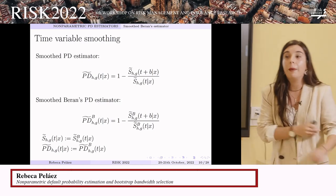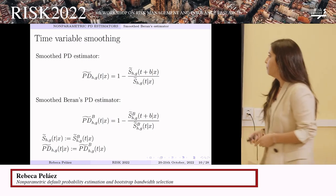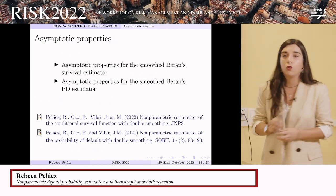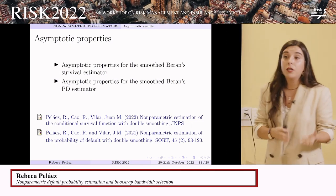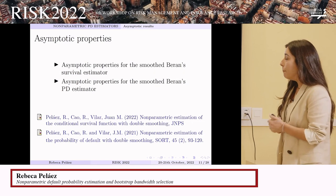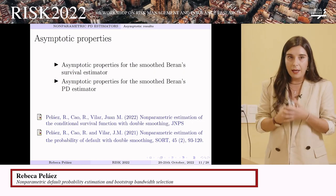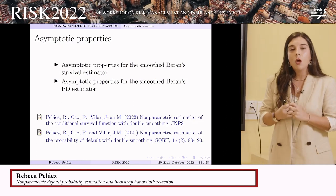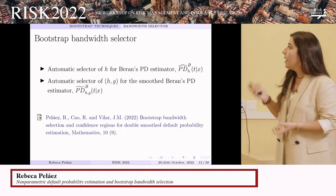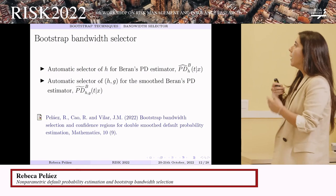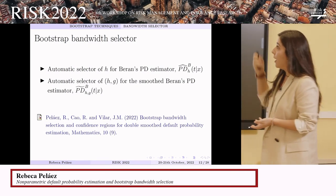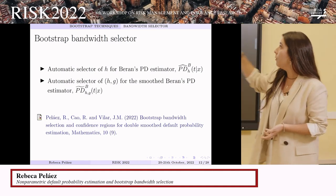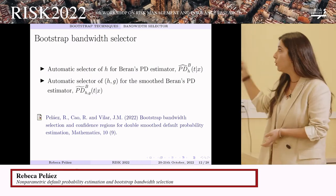We focus on the Beran estimator because it is very well-behaved, with desirable asymptotic properties. We have found an almost sure representation for this estimator and asymptotic expressions for bias and variance. However, these expressions are complex and depend on too many population functions and parameters that we cannot estimate in practice, so we need a way to find the bandwidth that the estimator depends on. We have proposed a bandwidth selector for the Beran estimator for bandwidth h, and an automatic selector for bandwidths h and g for the smooth Beran estimator of the probability of default.